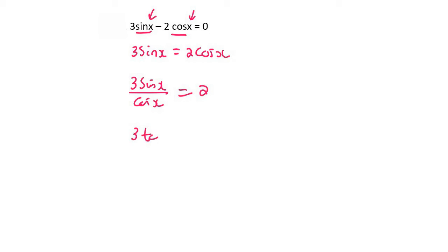So you end up with 3 tan x equals 2. You can then divide by 3 so you end up with tan x equals 2 thirds and then it's easy. Just get your reference angle by saying shift tan of 2 over 3, which would give us 33.69 degrees.